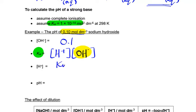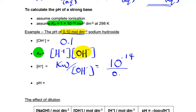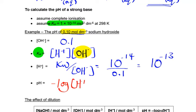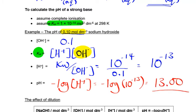The hydrogen ion concentration is Kw divided by the hydroxide ion concentration, which is 1×10⁻¹⁴ divided by 0.1, giving 1×10⁻¹³.